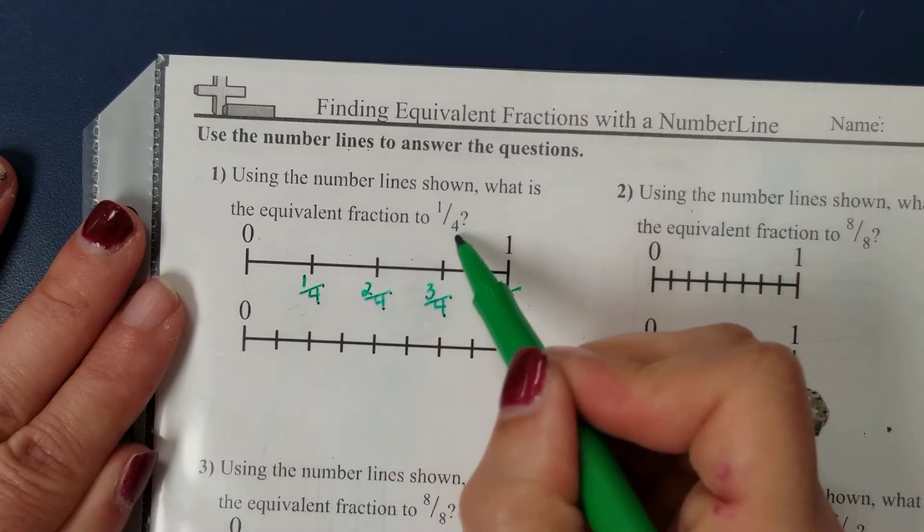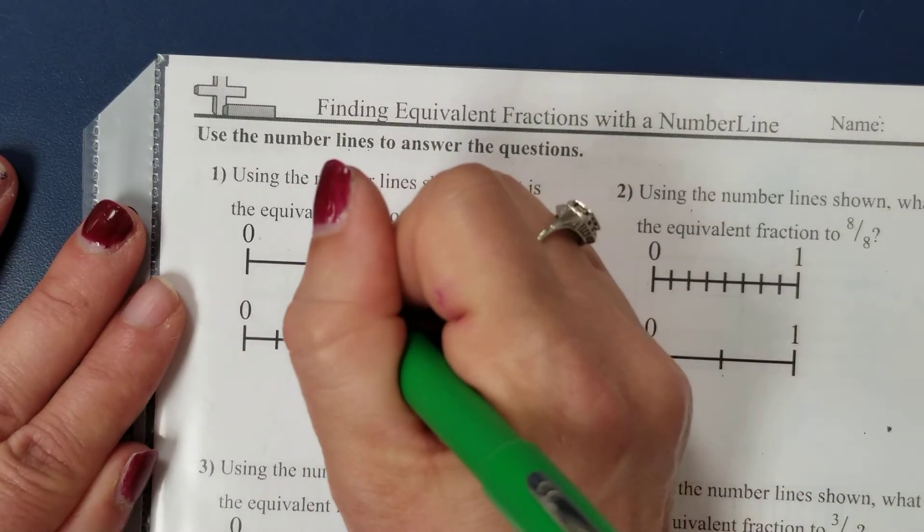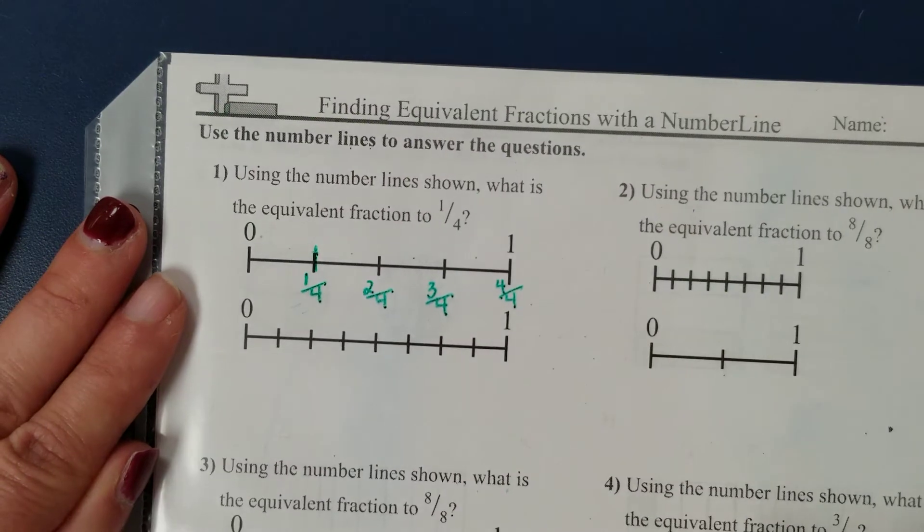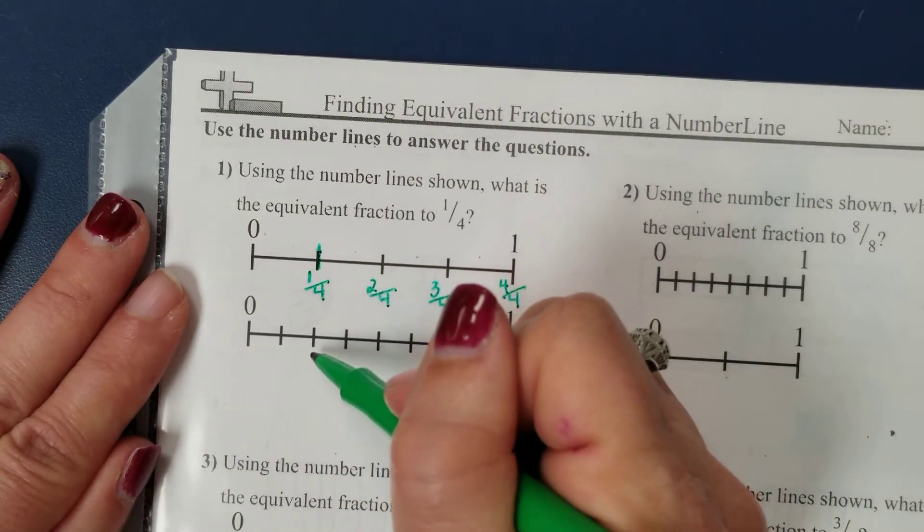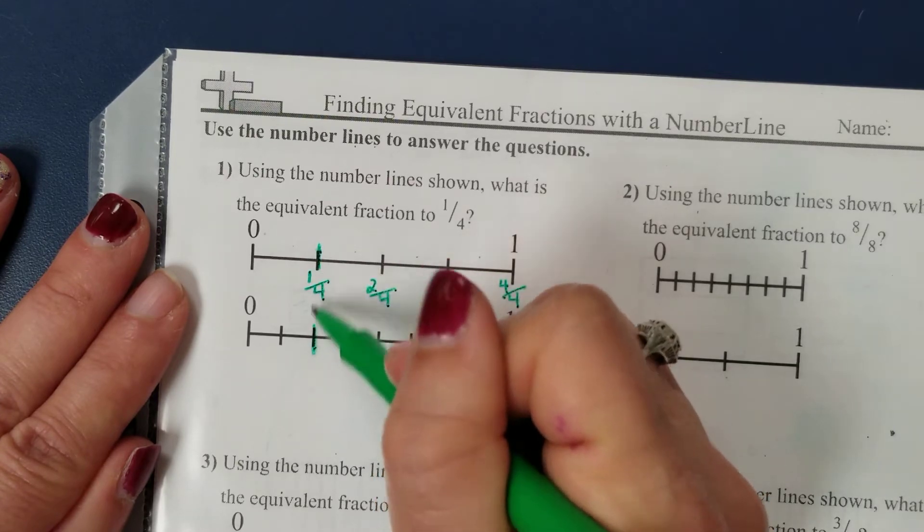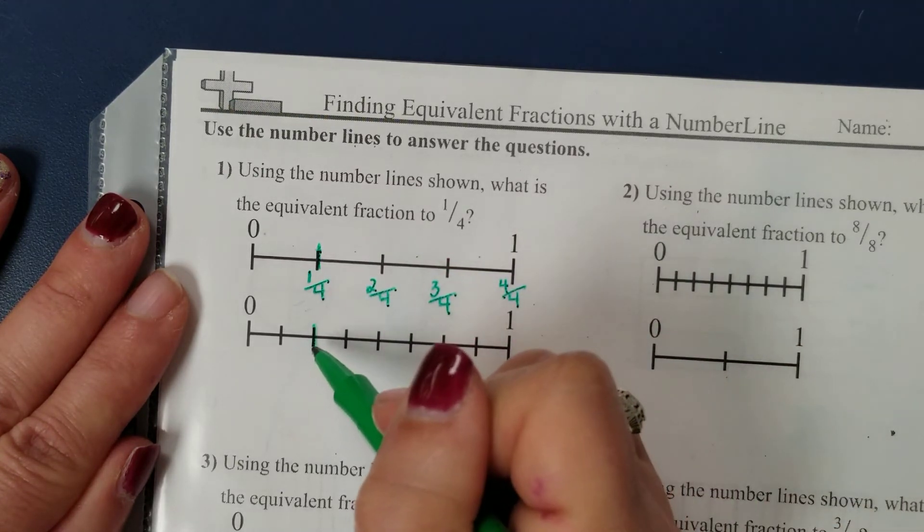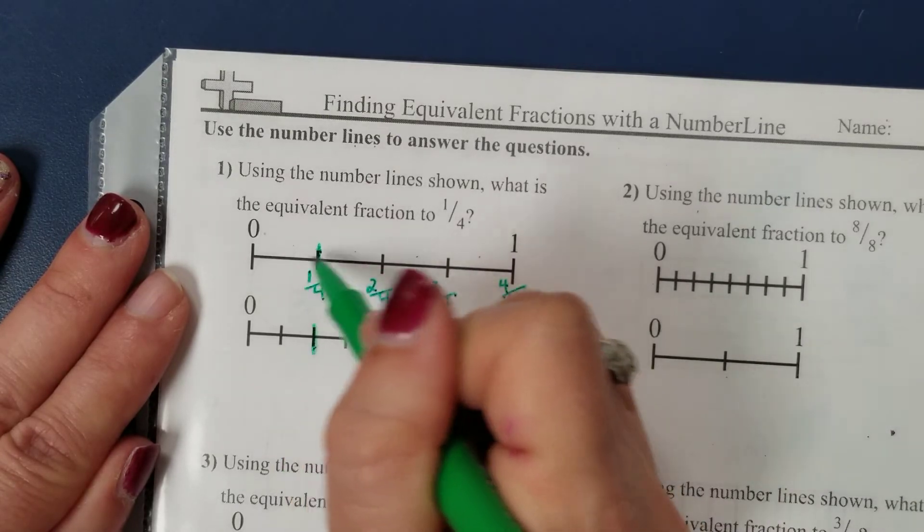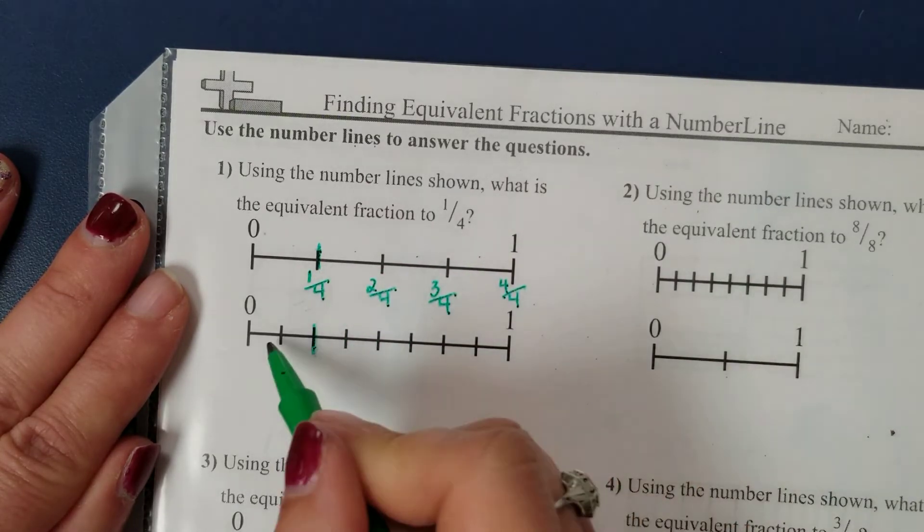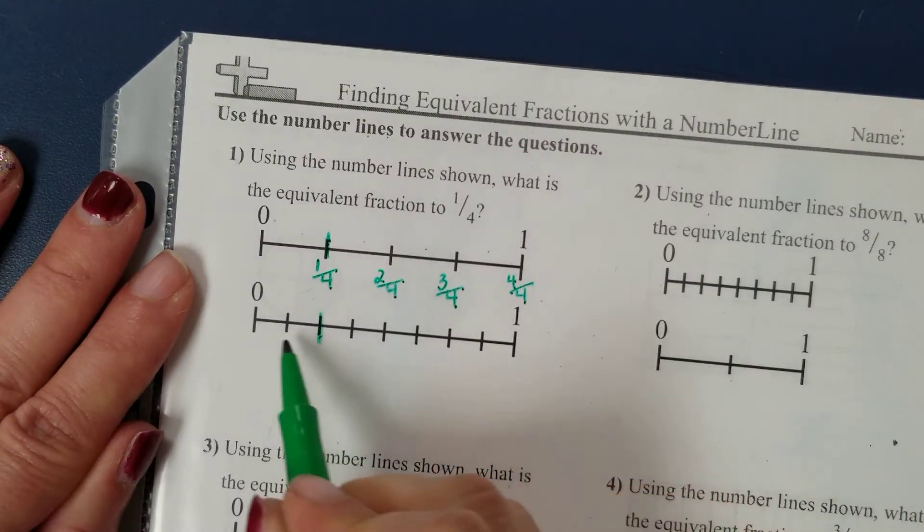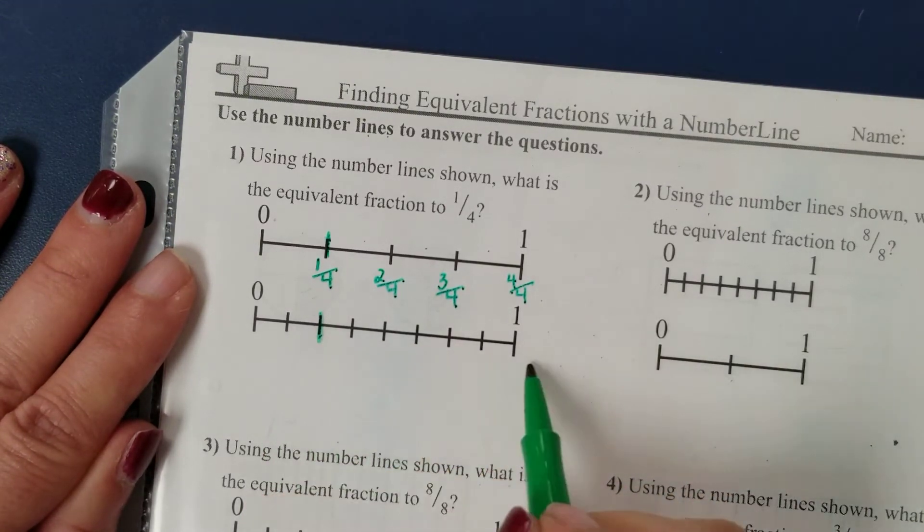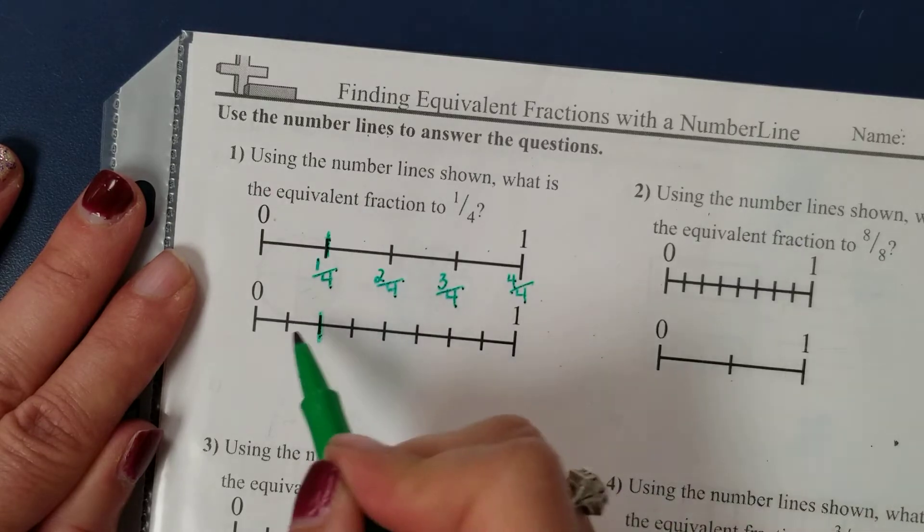So it wants to know what is a fraction equivalent to one-fourth. We just identified that as this one. That's the line that represents one-fourth. And now if we look down to the next number line, this one, it follows straight along. So this is the same amount as this one-fourth, but it's been broken up into more equal parts. So let's figure out first what the denominator is of the fractions on the second number line.